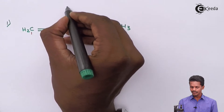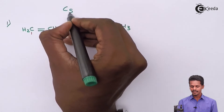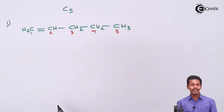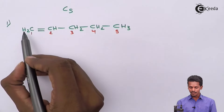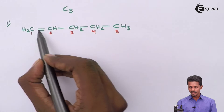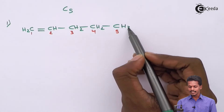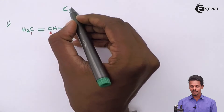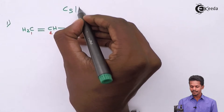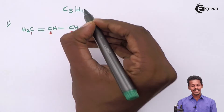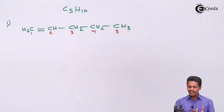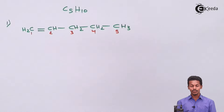So we have C5 confirmed. Counting the hydrogens: one, two, three, four, five, six, seven, eight, nine, ten — ten hydrogen atoms present. This confirms the first isomer satisfies the molecular formula C5H10.